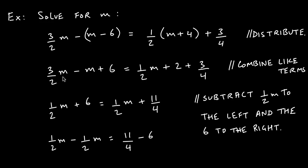Now we combine like terms. 3/2 m minus m gives us 1/2 m — I encourage you to work this out on paper yourself, as these are the kinds of questions you'll face on a test. The +6 comes down, the 1/2 m carries over, and 2 + 3/4 gives us a combined fraction. Then we combine terms with m and plain numbers separately.